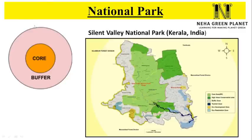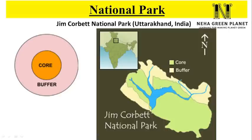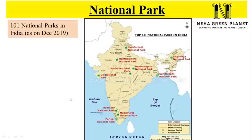Core and buffer areas are not always circular — their shape depends on the border area. For example, in Silent Valley National Park, the core area is the green-marked area and the buffer zone is the outer space. Similarly, in Jim Corbett National Park, the core area is depicted in green and the buffer area is the peripheral region where limited activity like tourism is permitted, marked in a light shade. As per 2019 data, India has 101 national parks — for example, Jim Corbett National Park, Ranthambore, Kanha National Park, and Gir National Park.